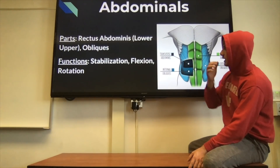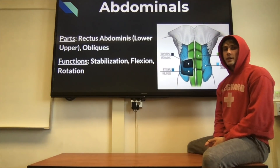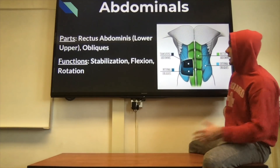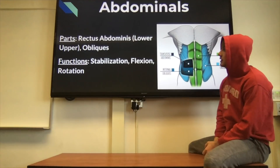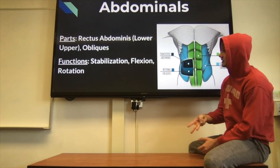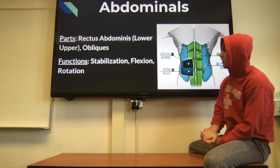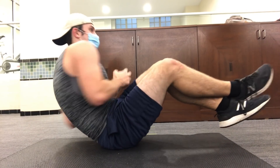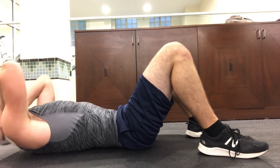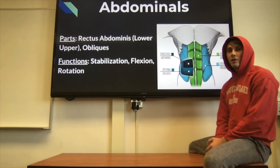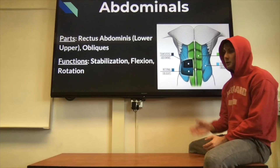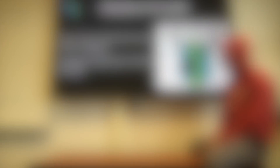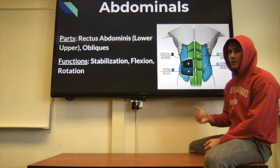The abdominals are broken into lower and upper portions, so you need both lower and upper ab exercises. The obliques run along the sides and are part of your core, primarily responsible for rotation and twisting. Your abs in general do stabilization, flexion, and rotation. Exercises that target your abs include planks, leg raises, Russian twists, and sit-ups. Keep in mind that the abs are layers of muscles — internal obliques, external obliques, and superficial layers — which means it takes more training to see results in ab strength than elsewhere.